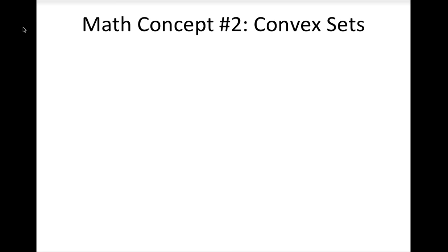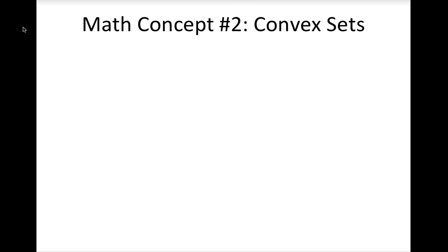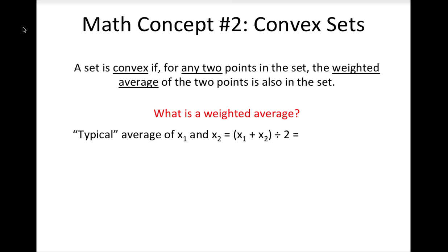Now that we have established what a set is, we can define what a convex set is. A set is convex if for any two points in the set, the weighted average of the two points is also in the set. You may be wondering what a weighted average is. The simple average of two numbers is one-half times x1 plus one-half times x2, which is a special case of a weighted average where both receive equal weight. More generally, a weighted average is any sum where the coefficients of x1 and x2 add up to one — for example, one-third x1 plus two-thirds x2, or one-fourth x1 plus three-fourths x2.